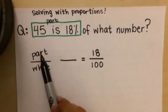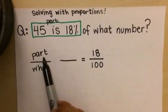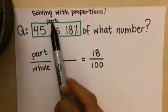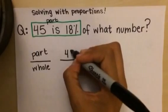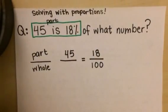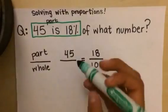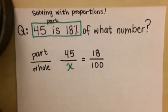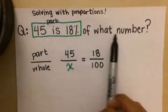So I put it on the top with my part, whereas 100 goes on the bottom with the whole. 45 is a part, which means that the numerator, the top number, needs to be 45. This means that we are looking to figure out: 45 is 18 percent of what number?